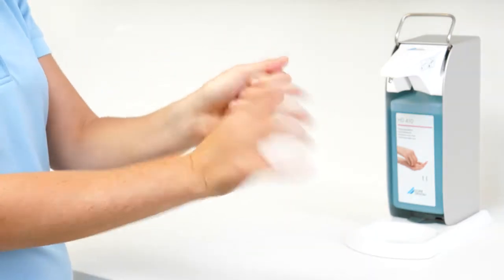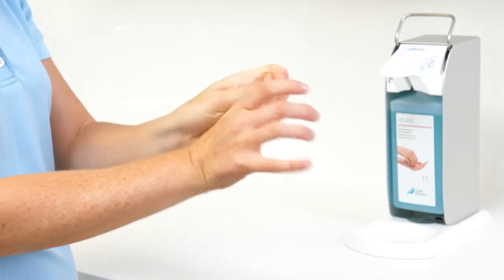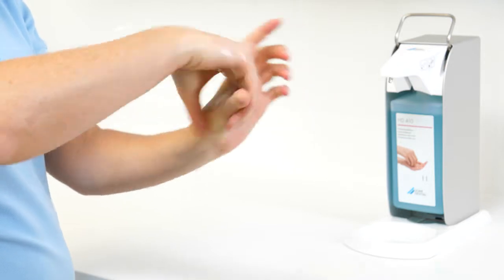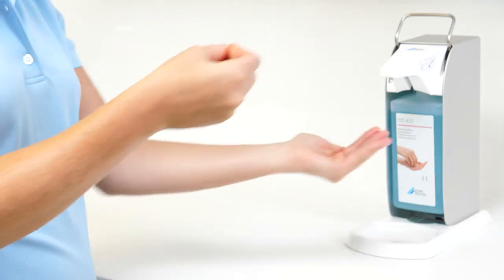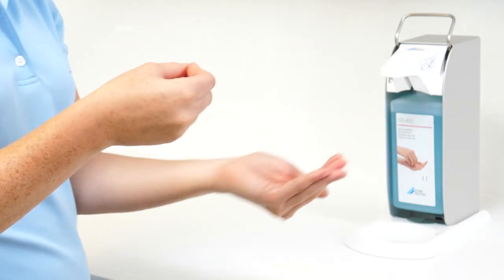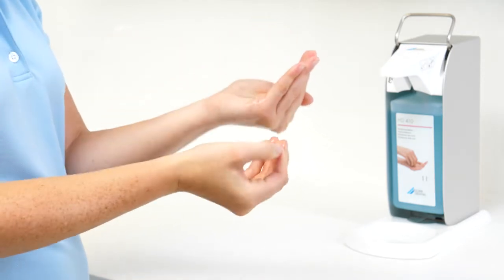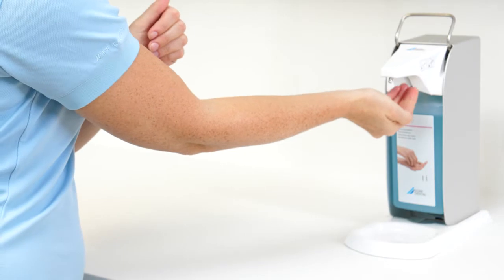Step 5: Circular rubbing of your right thumb in your closed left palm and vice versa. Step 6: Circular rubbing to and fro on your left palm with your right hand fingers closed.